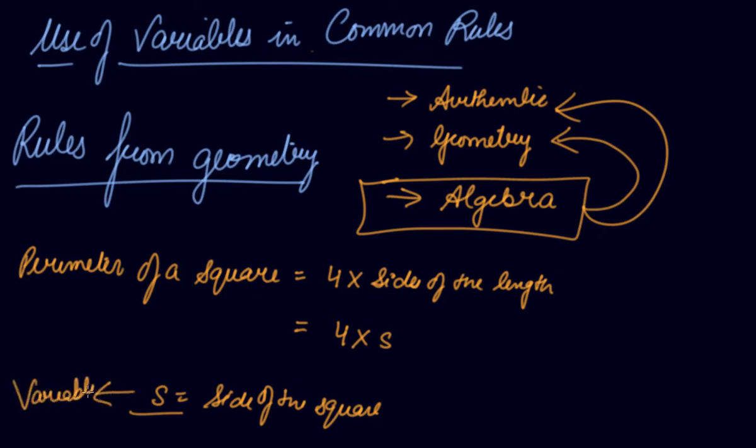If a side of a square is 5 cm, the perimeter is 20 cm. If the side of the square is 20 cm, the perimeter is 80 cm. S here is taken as the variable, so if we change the variable, the perimeter of the square will be changed accordingly.